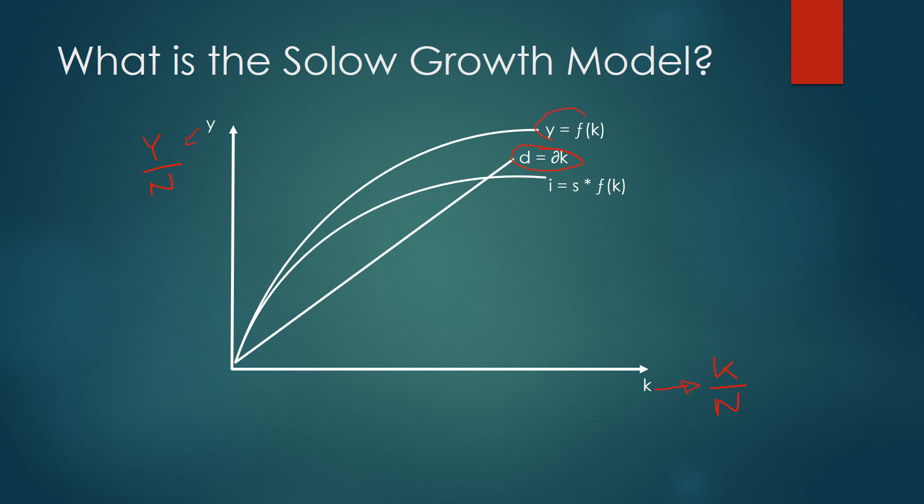Up here we have output per worker as some function of capital per worker, and again this makes sense — as you increase the amount of capital per worker you're going to get an increase in output per worker. Investment here is some factor of output per worker, but we multiply that by the savings rate. The reason for this is that savings are relative to investments — the idea in the model is that the amount that you save is then spent on investment.